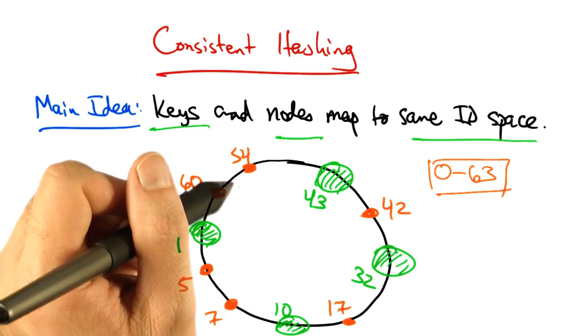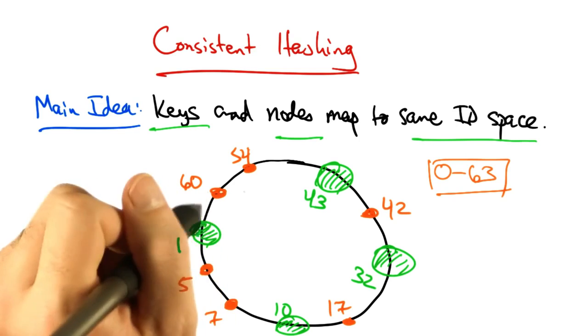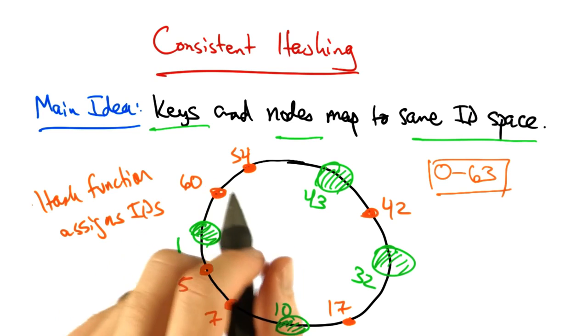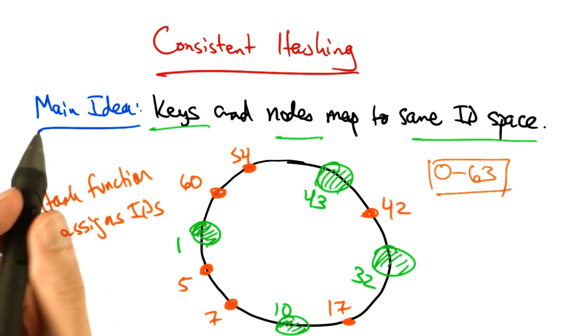A consistent hash function will assign the nodes and keys an identifier in this space. A hash function, such as SHA-1, might be used to assign these identifiers.